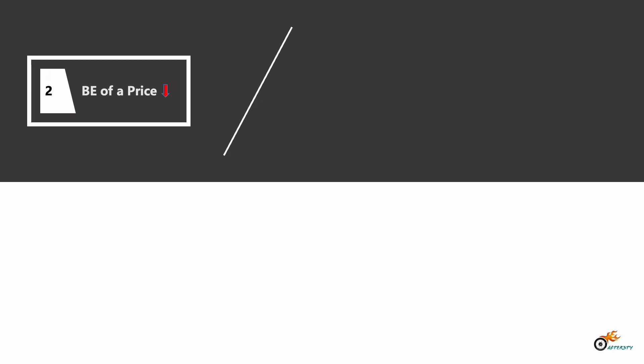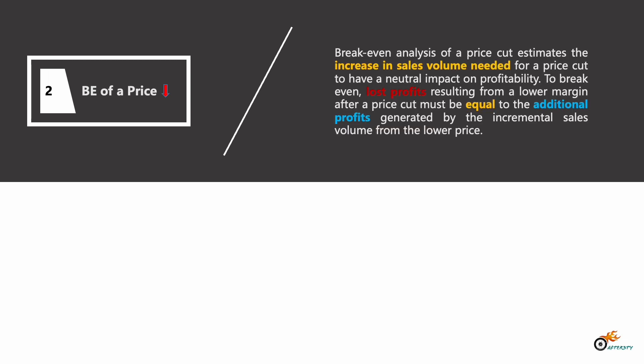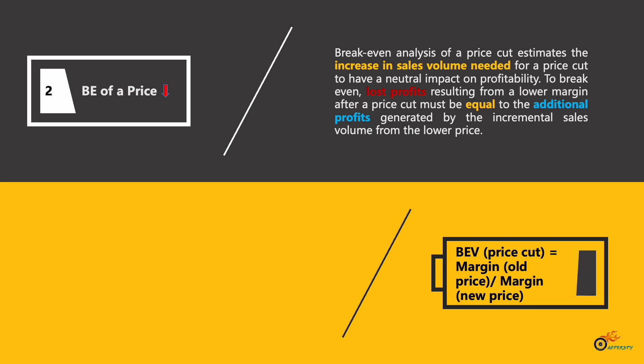The break-even analysis of a price cut estimates the increase in sales volume needed for a price cut in order to have a neutral impact on profitability. To break even, the lost profits resulting from a lower margin after a price cut must equal the additional profits generated by the incremental sales volume from the lower price. The equation is: break-even volume for a price cut equals the margin at the old price divided by the margin at the new price.